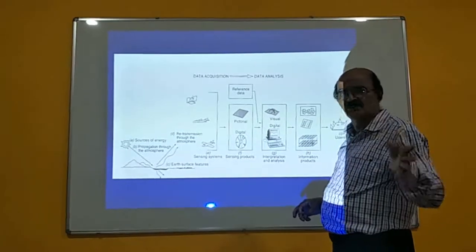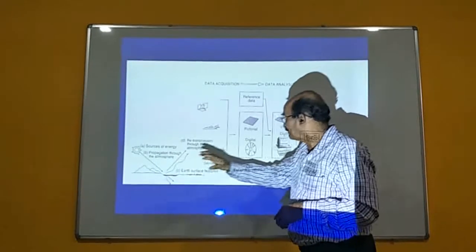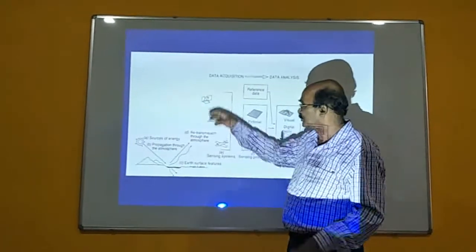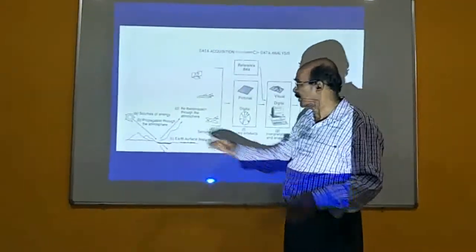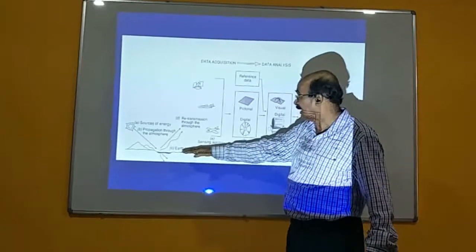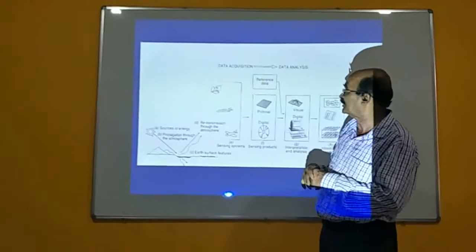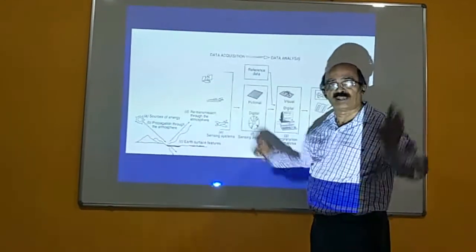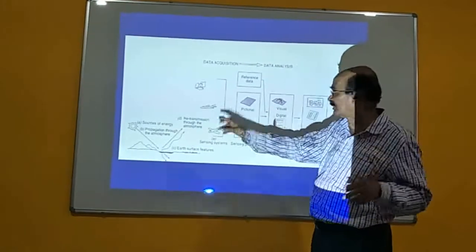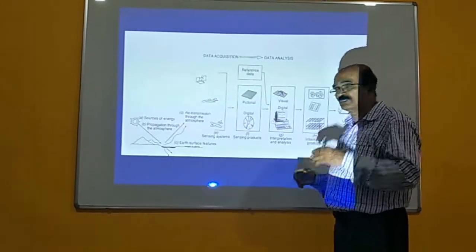In aerial remote sensing, the sun is the chief source of electromagnetic radiation. Energy passes through the atmosphere where scattering and absorption take place, and part of the light reaches the Earth's surface, interacts with surface features, and the retransmitted energy is collected by low, medium, or high altitude aircraft. Satellites collect satellite images, while aircraft collect aerial photographs, from which Survey of India generates topographical maps.